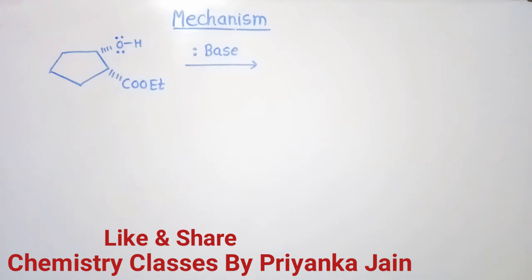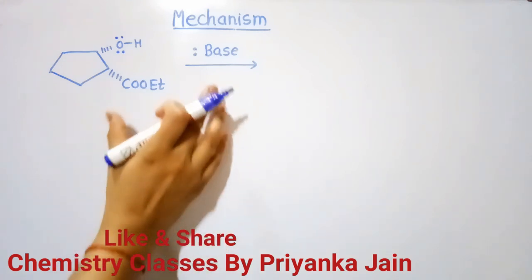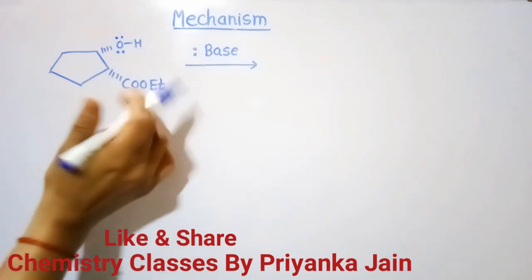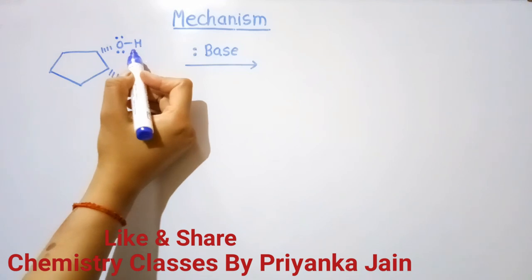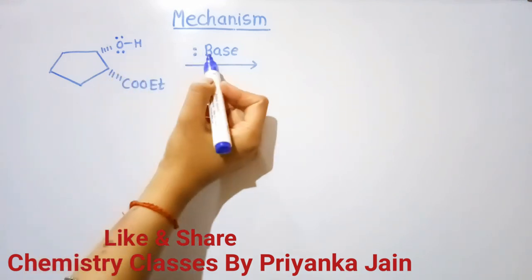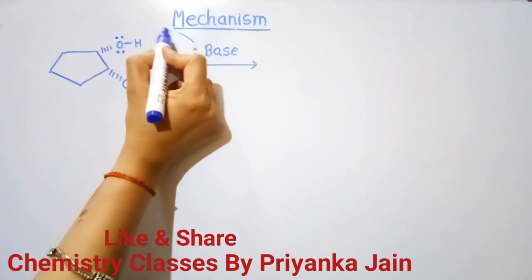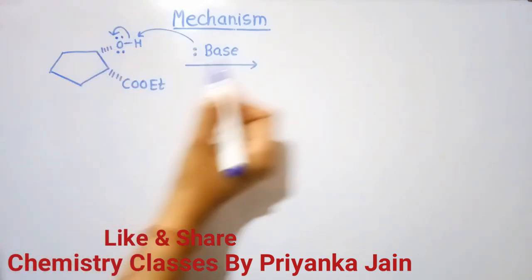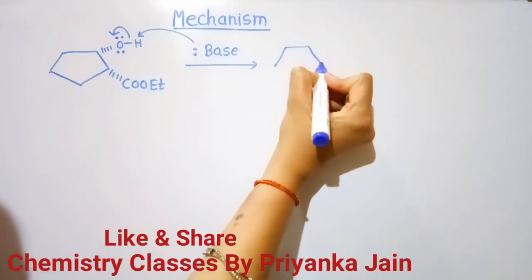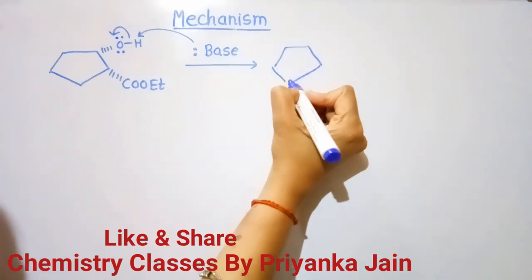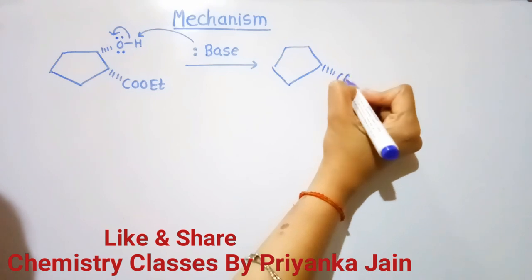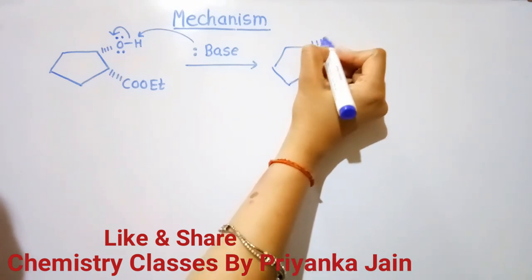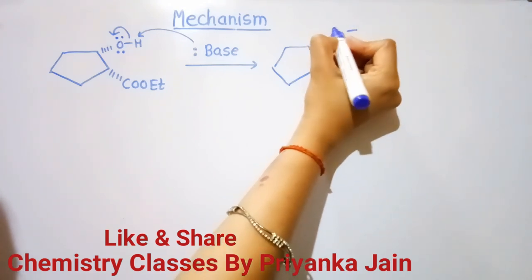Now we see the mechanism of the reaction. The first step in the reaction is the abstraction of a proton by the base from the alcoholic group. This hydrogen of the alcoholic group is abstracted by the base — it will attack like this and the electron density will come on oxygen, creating a negative charge on the oxygen.